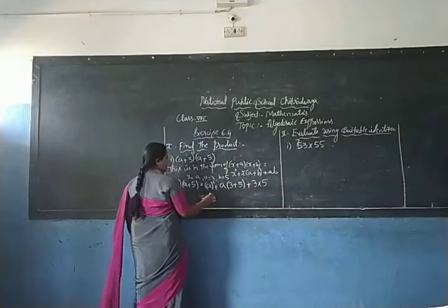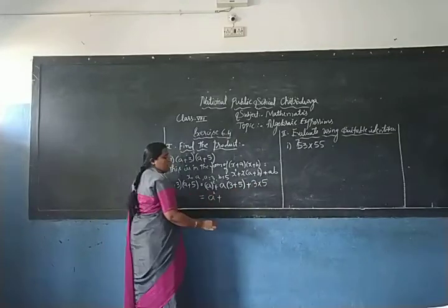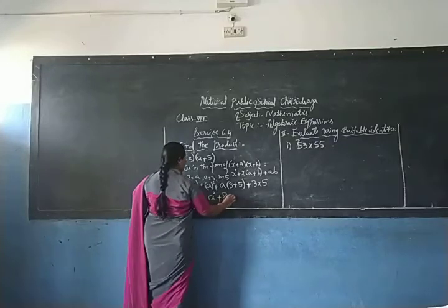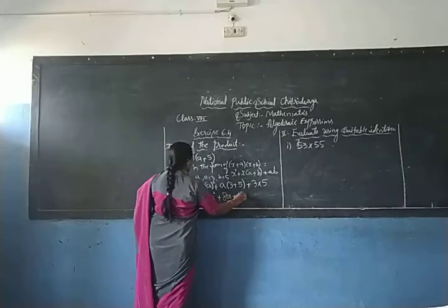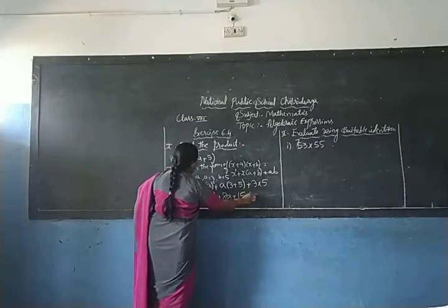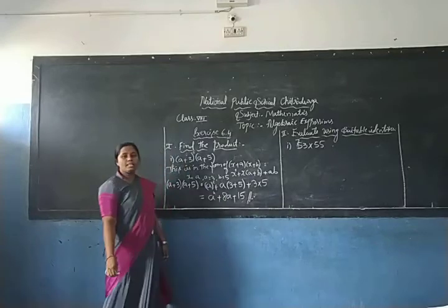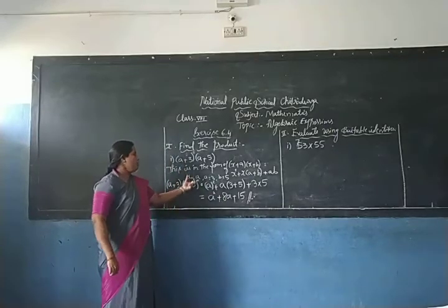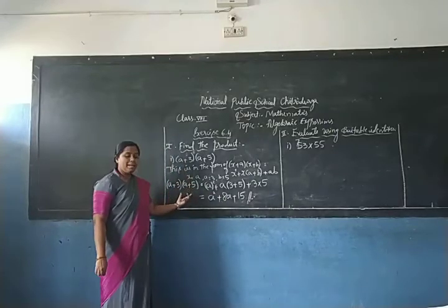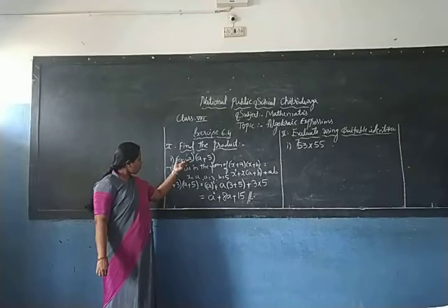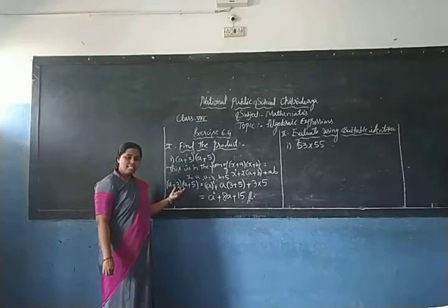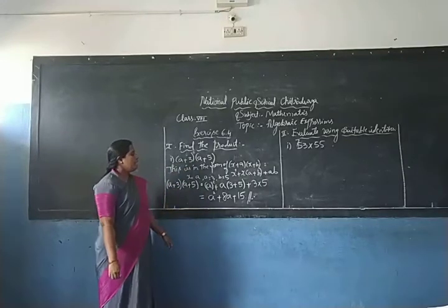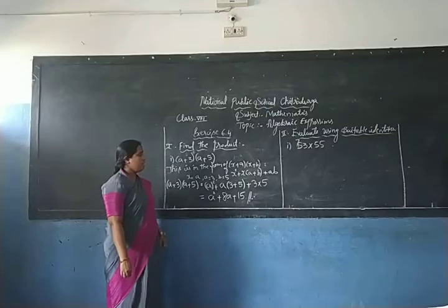Now, a² plus (3+5) is 8, so we get a² + 8a, and 3×5 is 15. Therefore, using the special product formula, we expand (a+3)(a+5) as a² + 8a + 15.